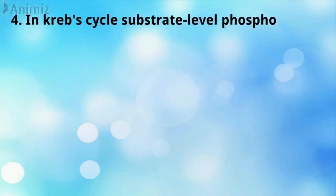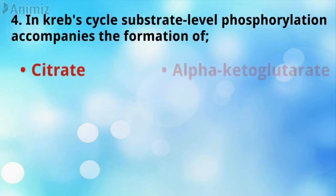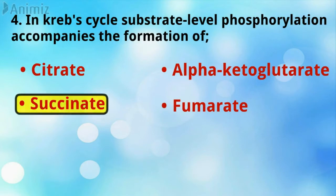In the Krebs cycle, substrate level phosphorylation accompanying the formation of succinate is the correct answer.